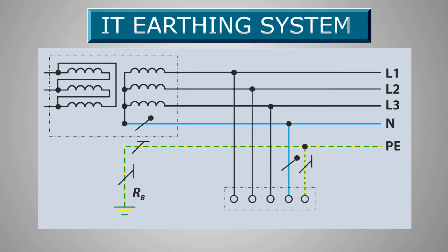The IT earthing system: the distribution system does not have any connections to earth, or it has only a high-impedance connection. The basic feature of the IT earthing system is that in the event of a fault between phases and earth, the system can continue to operate without interruption. Such a fault is referred to as a first fault. Thus, usual earthing protection is not effective for this system, and this type is not meant for consumer power supply. The IT earthing system is used for power distribution systems such as substations or generators.